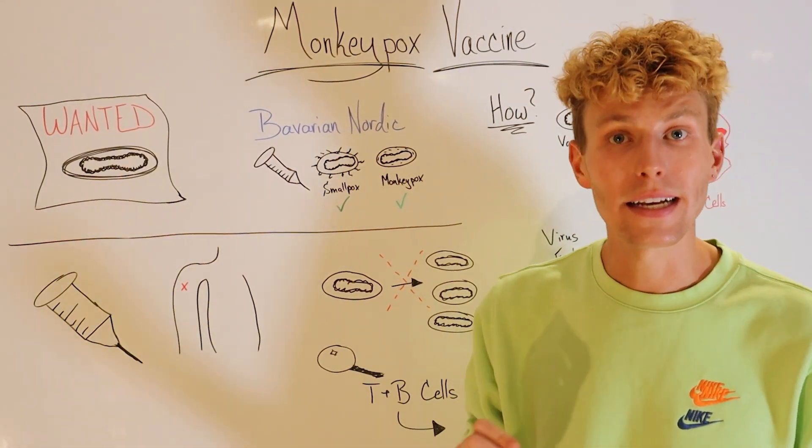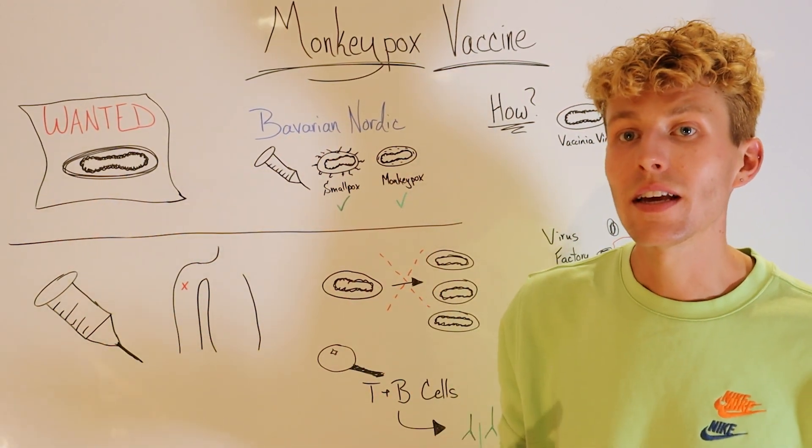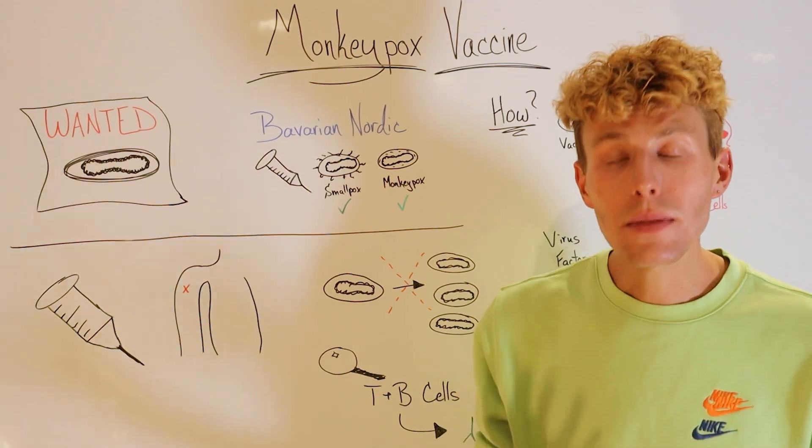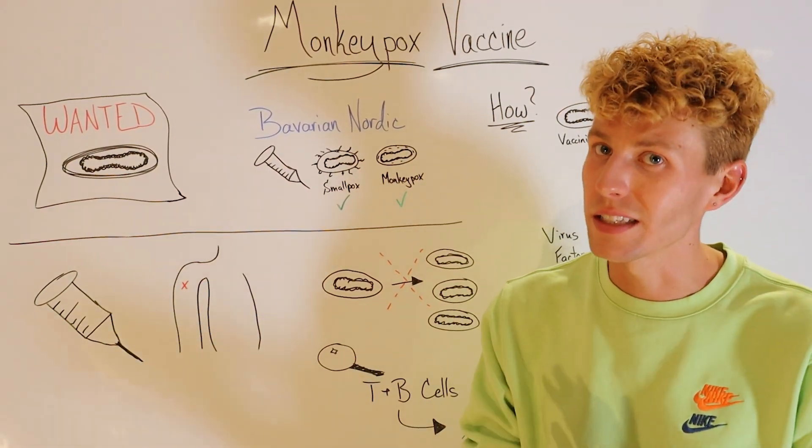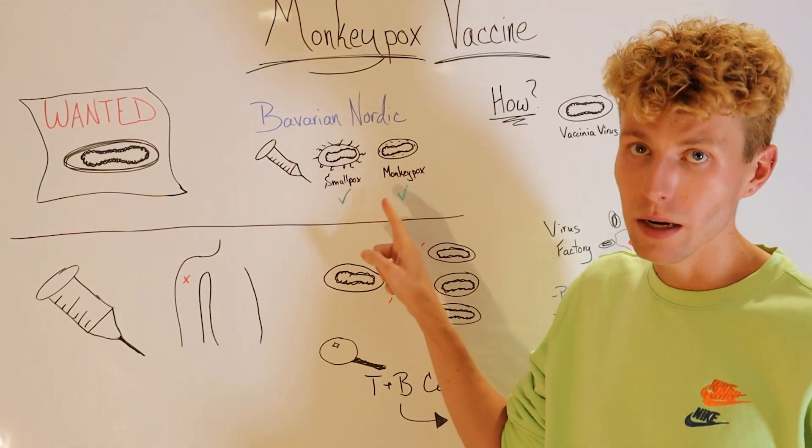Now the specific vaccine against monkeypox is made by Bavarian Nordic, and they're able to use a family of viruses that can generate an immune response against a variety of different viruses, including smallpox and monkeypox.